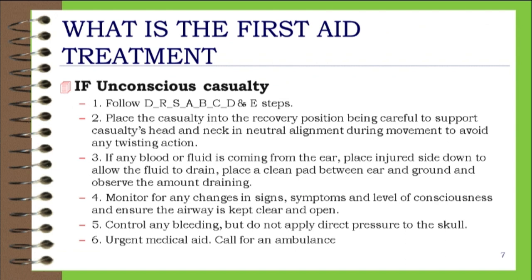What is the first aid treatment of head injury? If unconscious casualty: 1. Follow D-R-S-A-B-C-D and E steps. 2. Place the casualty into the recovery position, being careful to support the casualty's head and neck in neutral alignment during movement to avoid any twisting action. 3. If any blood or fluid is coming from the ear, place the injured side down to allow the fluid to drain; place a clean pad between ear and ground and observe the amount draining. 4. Monitor for any changes in signs, symptoms, and level of consciousness, and ensure the airway is kept clear and open. 5. Control any bleeding, but do not apply direct pressure to the skull. 6. Urgent medical aid — call for an ambulance.